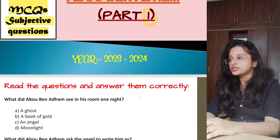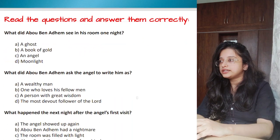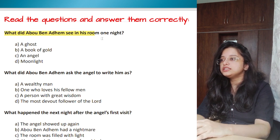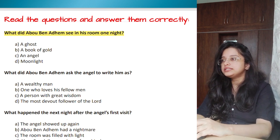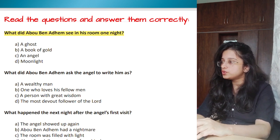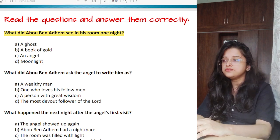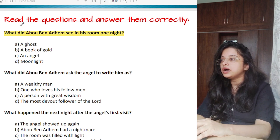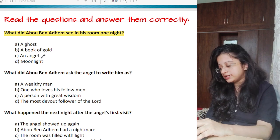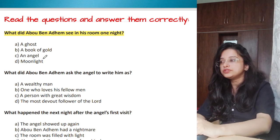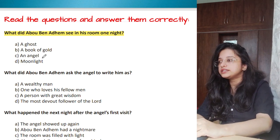Let us come to the questions. First we will do MCQs — read the questions and answer them correctly. Question one: what did Abu Ben Adham see in his room one night? The options are: a ghost, a book of gold, an angel, or moonlight. If you know a bit of the poem these are easy ones. The most significant thing he saw is the angel, so option C is correct.